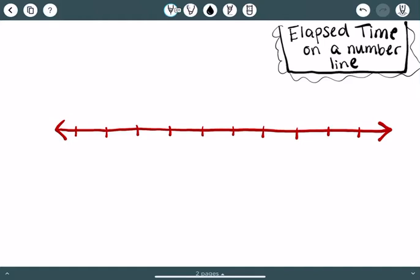We are going to be talking about how to show elapsed time on a number line. So I went ahead and drew my number line there in red.